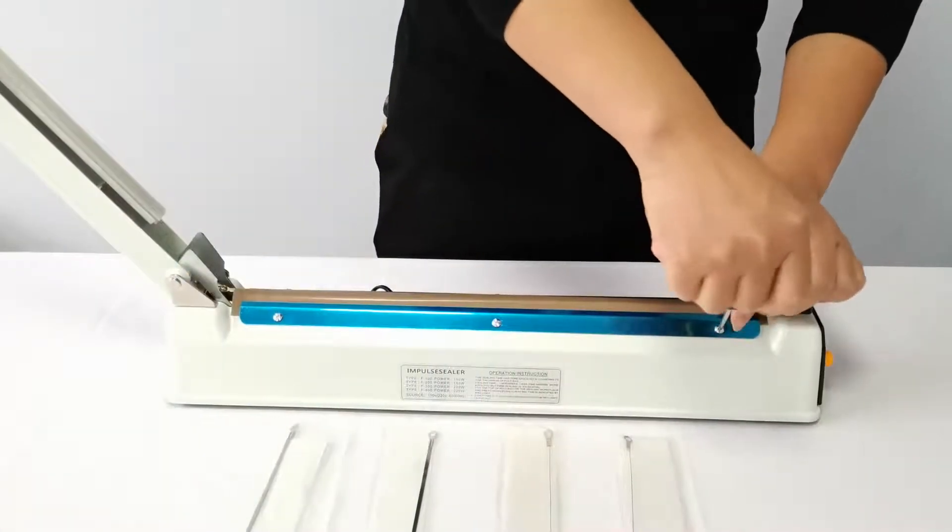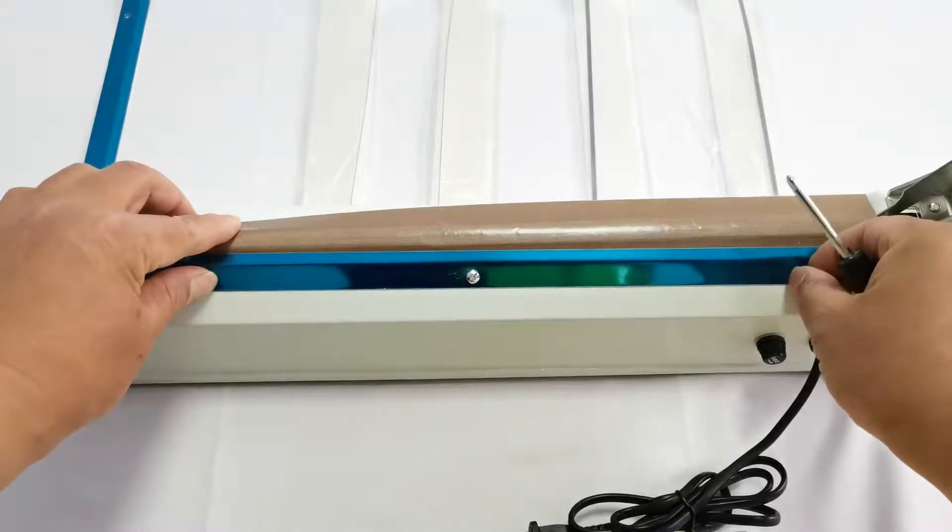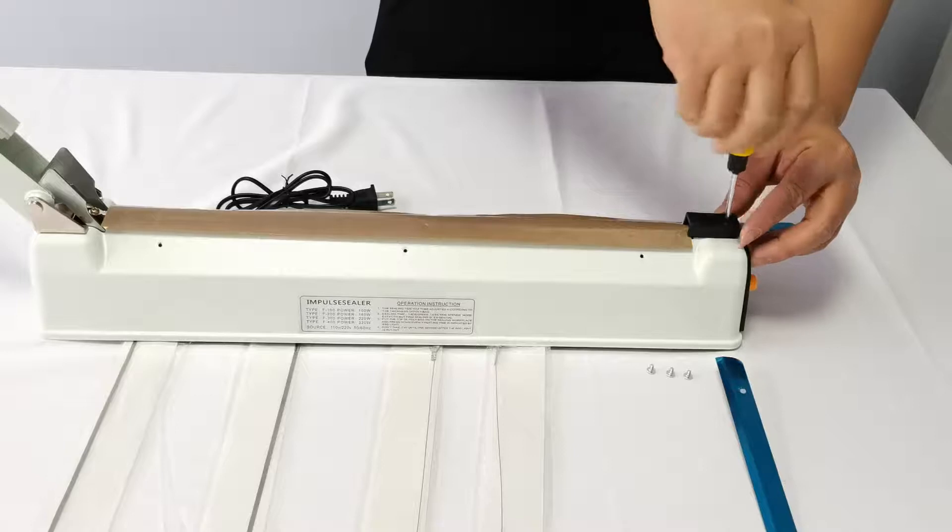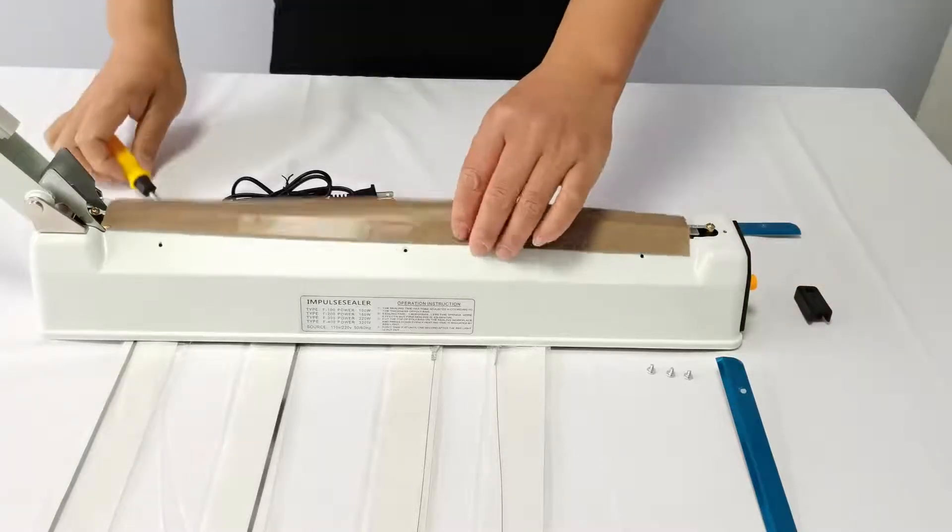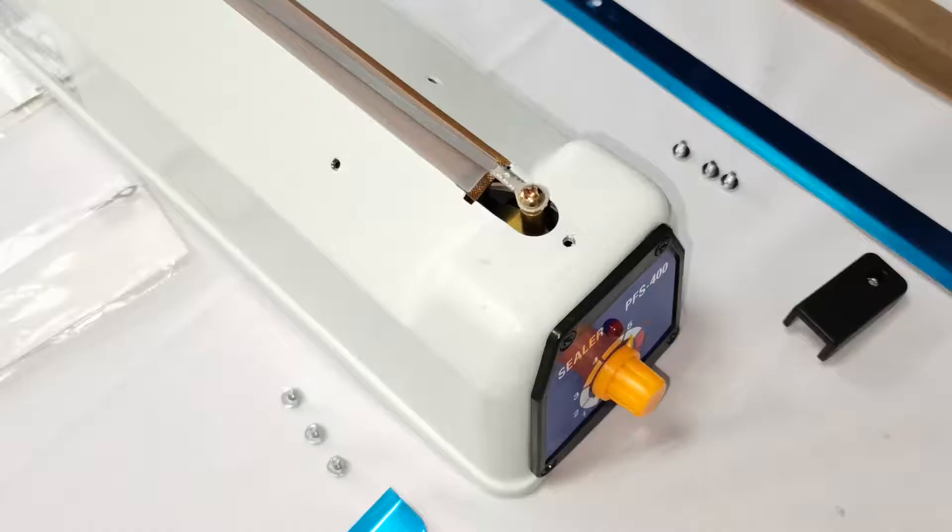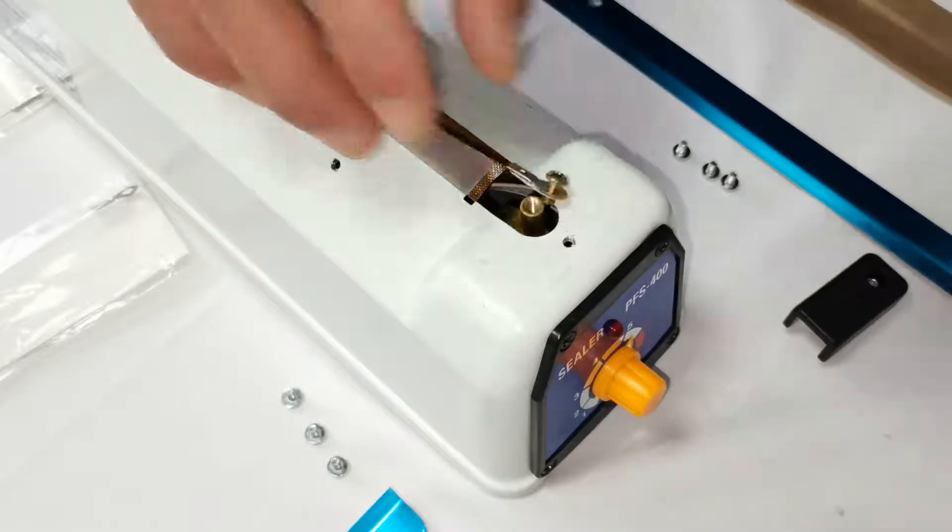Specifications: max sealing length 12 inch, width 3mm, and thickness 0.8mm. Upgrade heavy-duty thicken iron housing case. The shell is upgraded with high-quality iron material, which is more durable quality material.